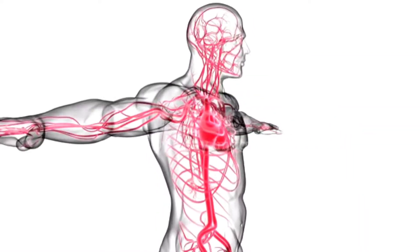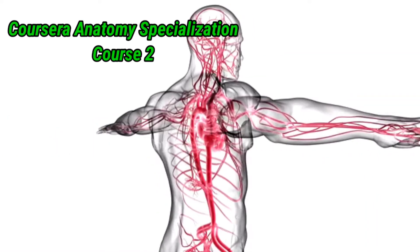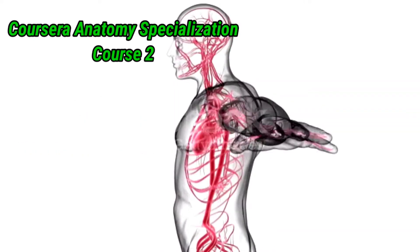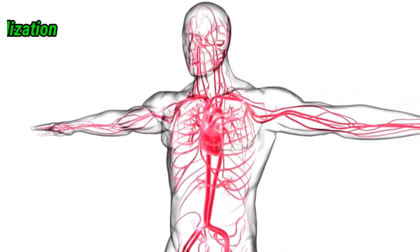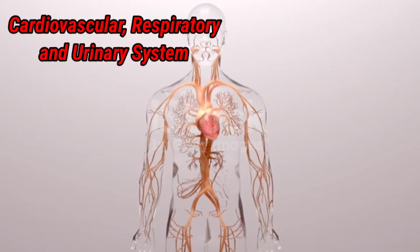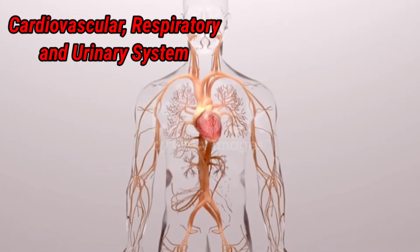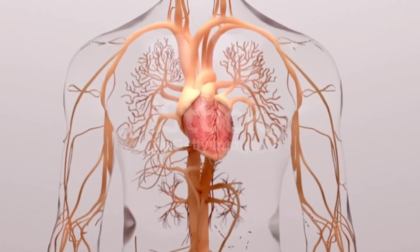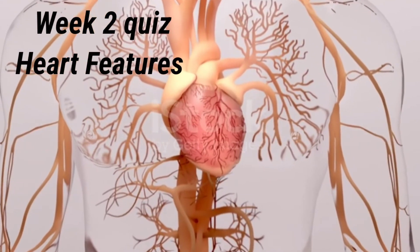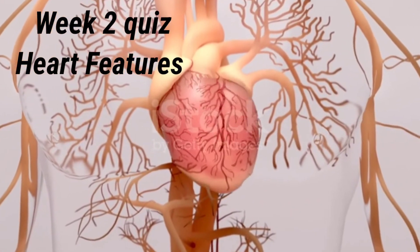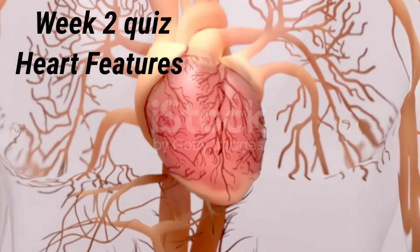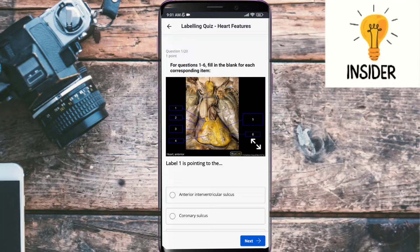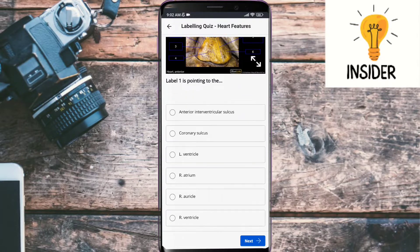Hey everyone, hope you are all doing well. Today I am here with a new quiz about the Coursera anatomy specialization second course, which covers the cardiovascular, respiratory, and urinary systems. Today our quiz is about heart features, so let's start. Let's move to the first question — label one is pointing towards its answer, which could be right auricle.